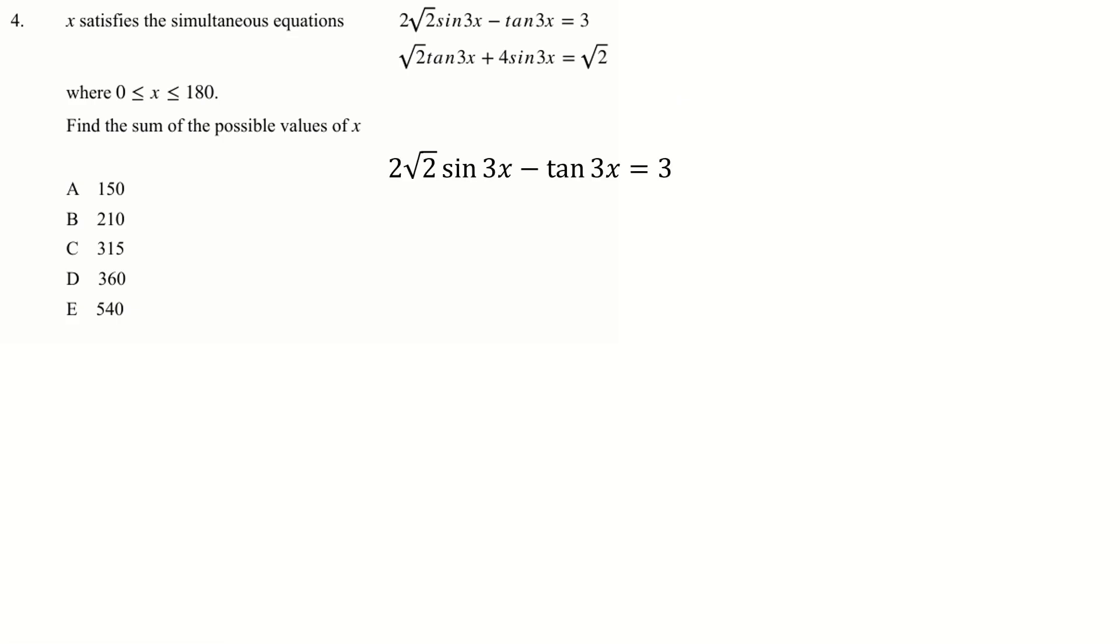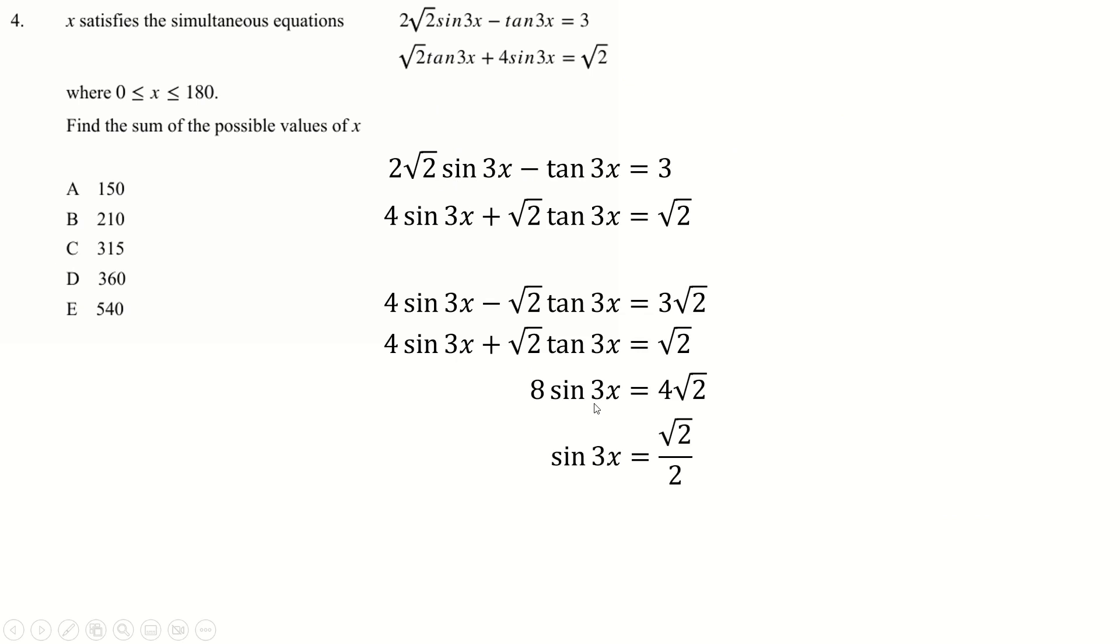Really lovely question here. Firstly, just write the two out, but swap this sin 3x with this tan 3x, because that way we have the same thing here and here. Times the top equation by root 2 to make this. Now we can add the two equations together. Divide by 8. Again, sine inverse of root 2 over 2 is π over 4. But we're working in degrees now, so that's 45. Or 135, that's 45 beyond 90.